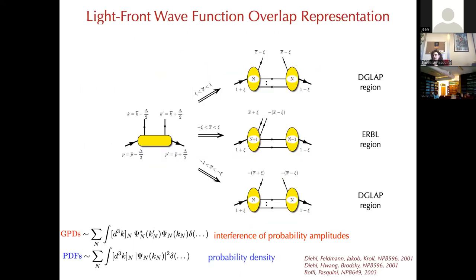To understand GPDs in this description, you truncate the Fock space expansion and create a model for each of the coefficients. In principle the sum goes from 3 to infinity, but in model calculations you must truncate. For GPDs, results have been obtained up to the five-parton component. As you increase the number of partons, the calculation becomes much more difficult.